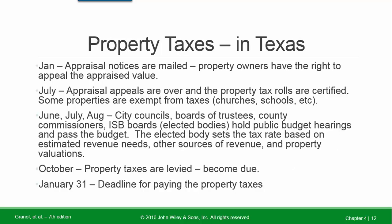Property taxes in Texas: In January, appraisal notices are mailed and property owners have the right to appeal the appraised value. In July, appraisal appeals are over and the property tax rolls are certified. Some properties are exempt from taxes — schools, churches, non-profits. During June, July, and August, city councils, boards of trustees, county commissioners, independent school boards, and other elected bodies hold public budget hearings and pass the budget. The elected body sets the tax rate based on estimated revenue needs, other sources of revenue, and property valuations.